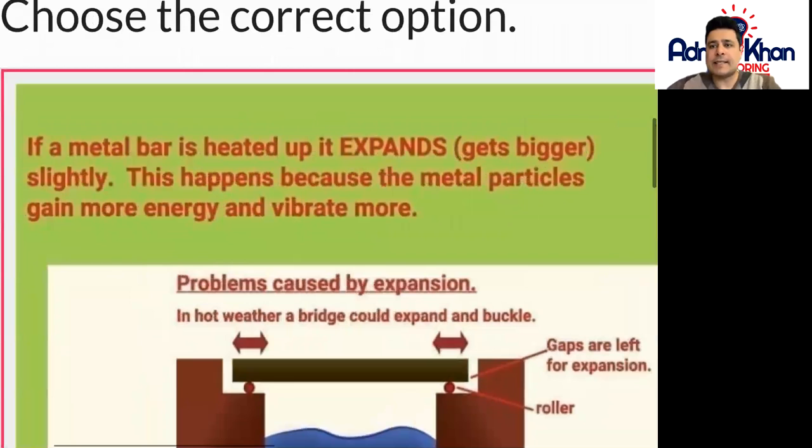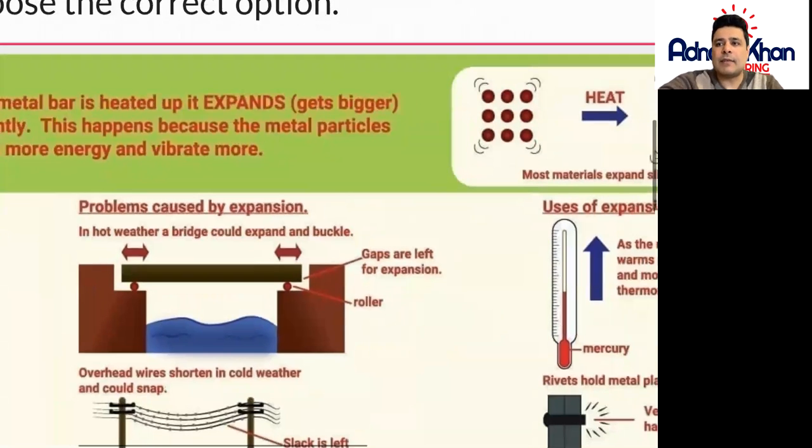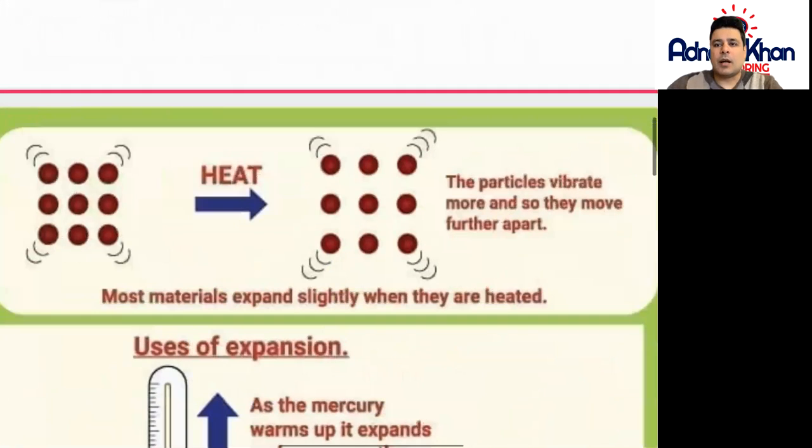If a metal bar is heated up, it expands. In other words, it gets bigger slightly. This happens because the metal particles gain more energy and they start vibrating. Here we can see from this image the particles vibrate more and so they move apart, which means that they actually expand.